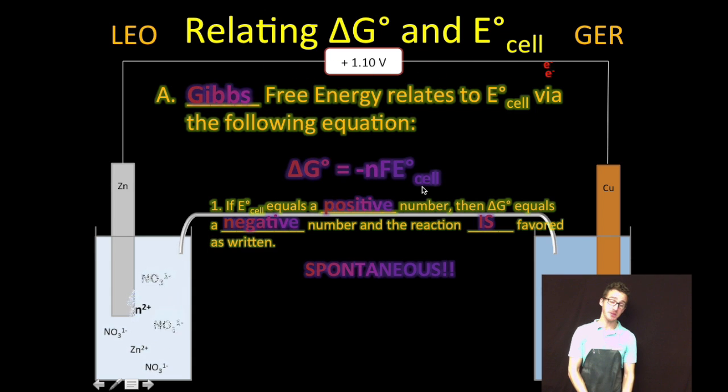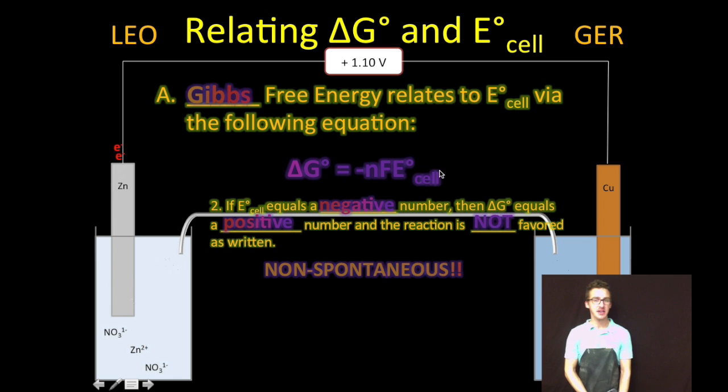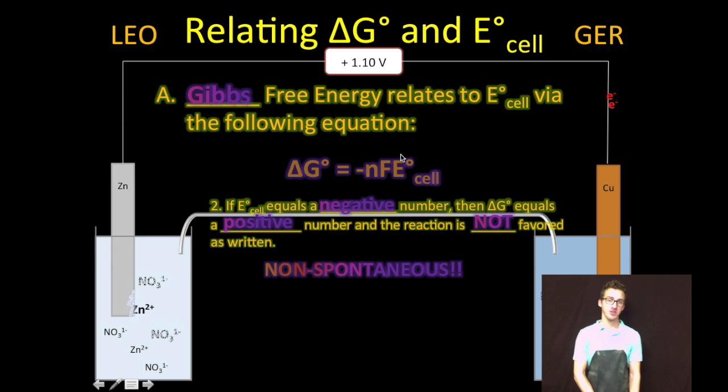So positive cell potential equals negative Delta G. Conversely, if your cell potential is negative, you'll get a positive Delta G value. A negative cell potential results in a positive Delta G, which indicates a thermodynamically unfavorable or non-spontaneous reaction.